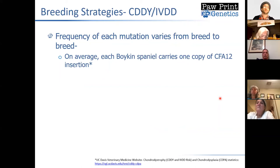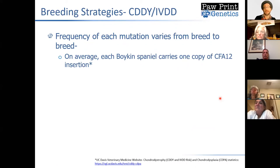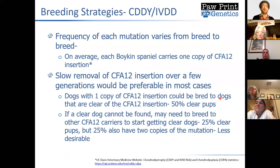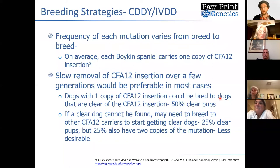When we're talking about the Boykin Spaniel, the frequency of the mutation is fairly high. On average, each Boykin carries about one copy of the chromosome 12 mutation — the one associated with intervertebral disc disease. Some dogs won't carry any, some will carry two copies. In order to maintain genetic diversity, we have to be smart about this. I would recommend the slow removal of this mutation over multiple generations if we're going to remove it at all. The most ideal way would be to breed dogs with the mutation to dogs that are clear — in the case of a dog with one copy, about 50% of puppies would be clear if bred to a clear dog.